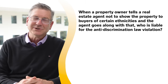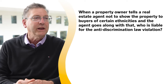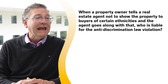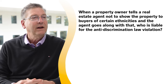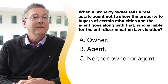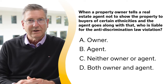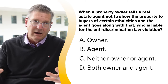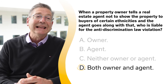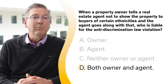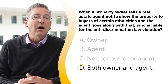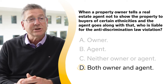When a property owner tells a real estate agent not to show the property to buyers of certain ethnicities and the agent goes along with that, who is liable for the anti-discrimination law violation? A, the owner; B, the agent; C, neither owner nor agent; or D, both owner and agent. The correct answer is D, both owner and agent. Both will be liable for discrimination practices because both are violating the law — the owner by restricting the buyer's ethnicity and the agent by going along with it.